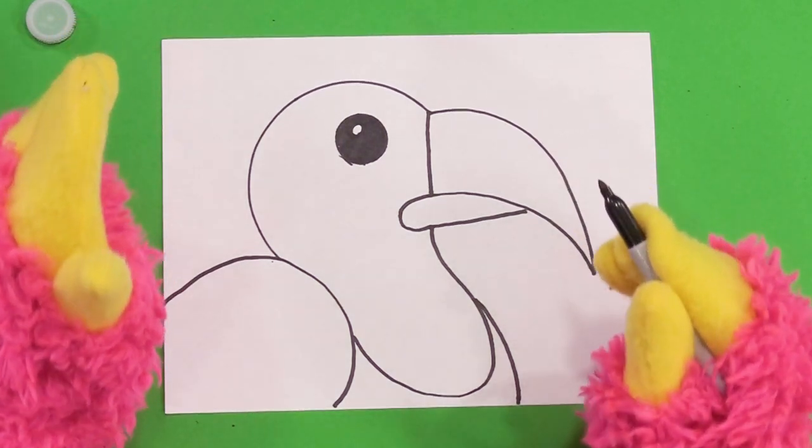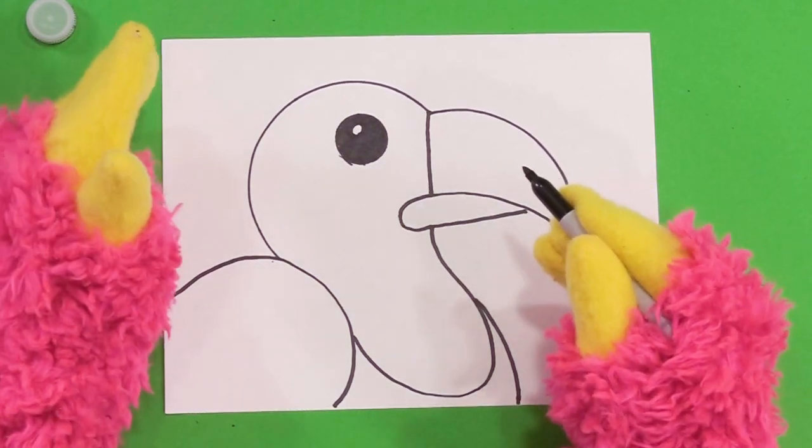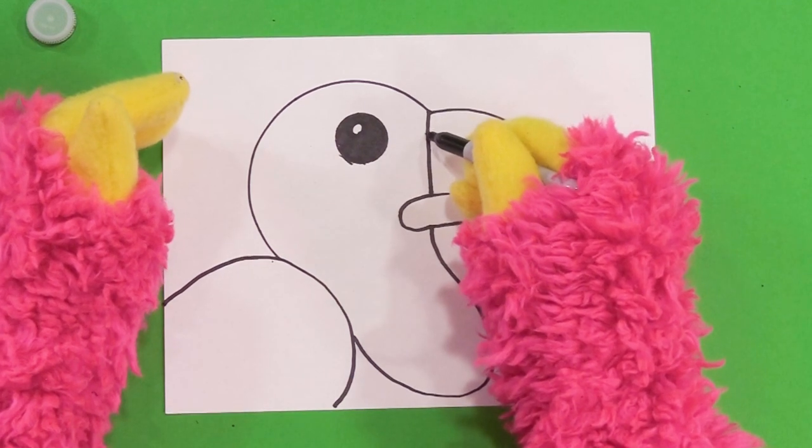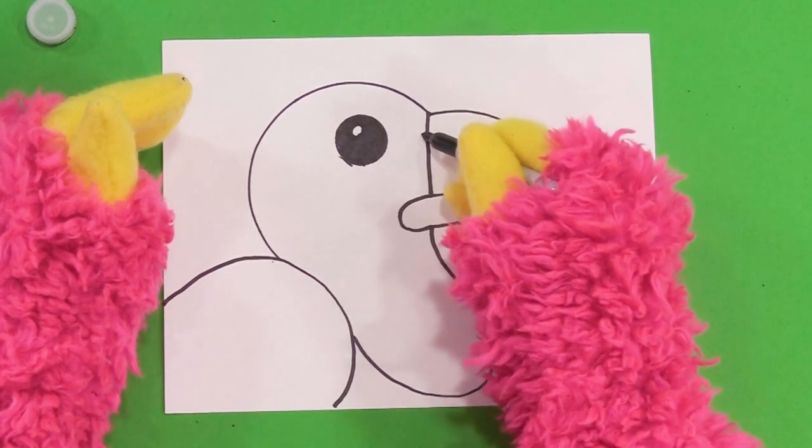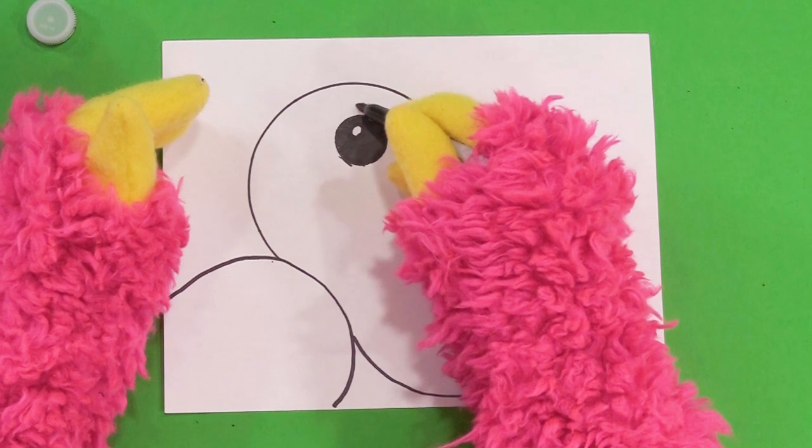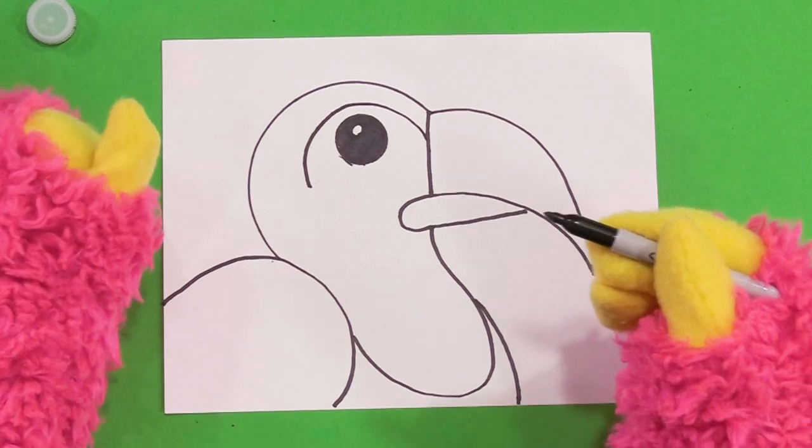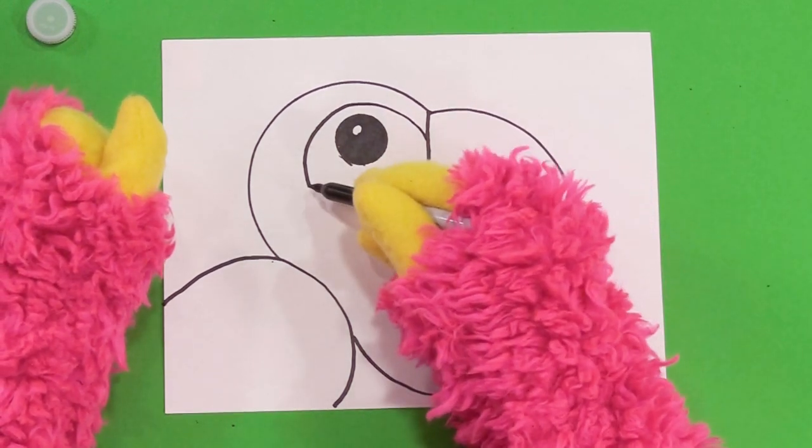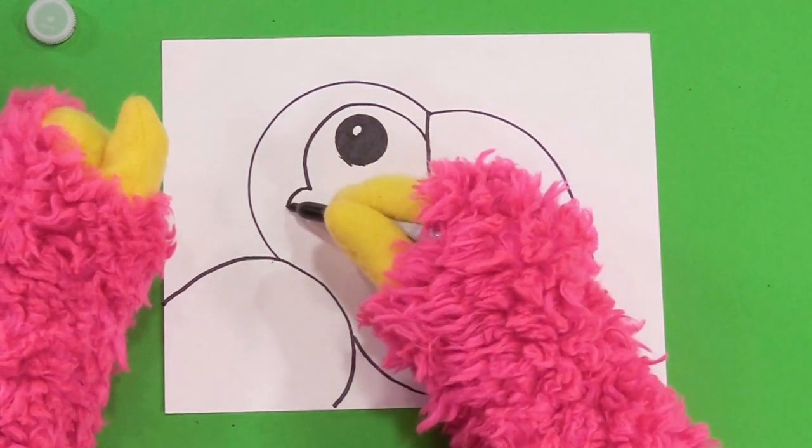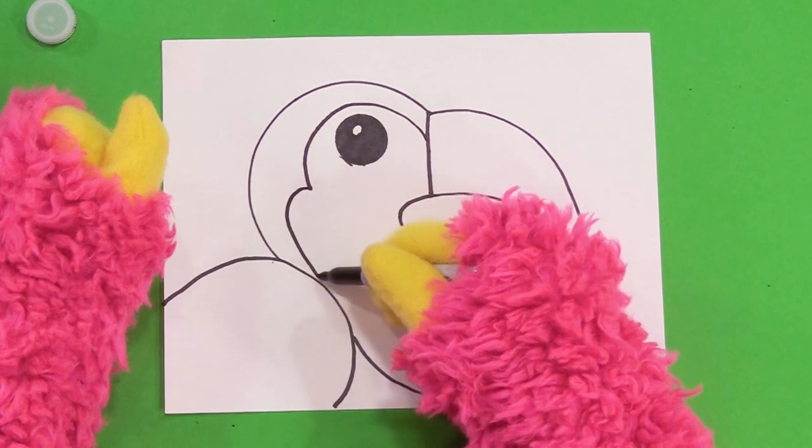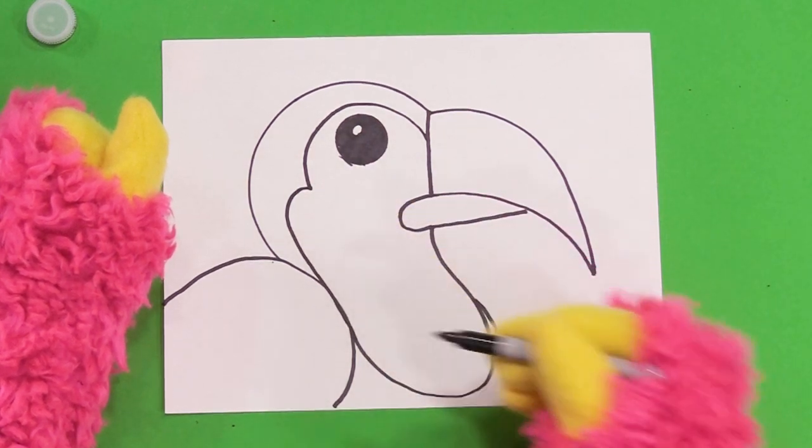Next, I want to do some more details on my toucan. So what I'm going to do is I'm going to start right here at the beak, and I'm going to do a curved line that goes around the eye and stops about there. Next, I'm going to do another line that starts here, curves around, and connects down to there.